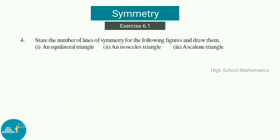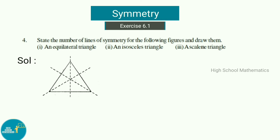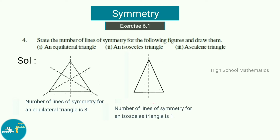Question 4: State the number of lines of symmetry for the following figures and draw them. The first figure is an equilateral triangle, which has three lines of symmetry. The second figure is an isosceles triangle, which has one line of symmetry.